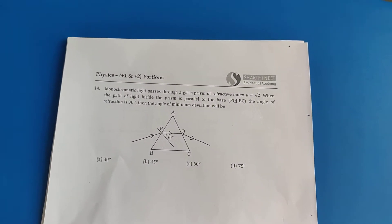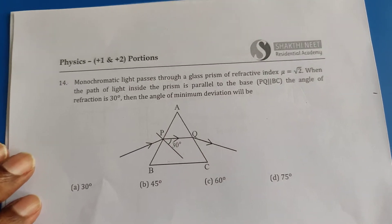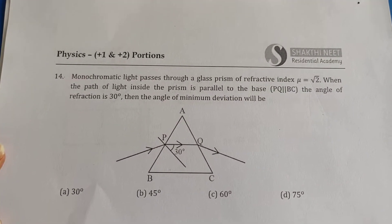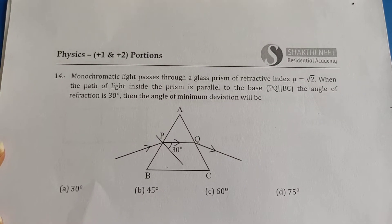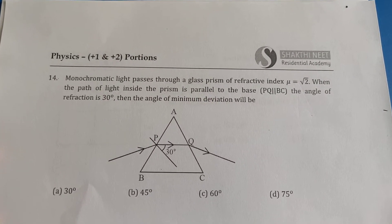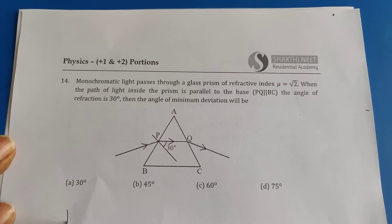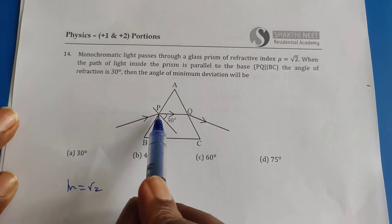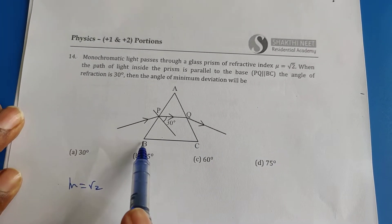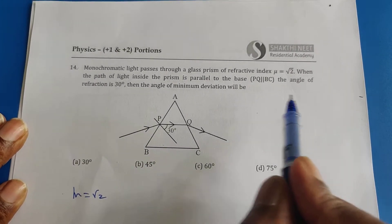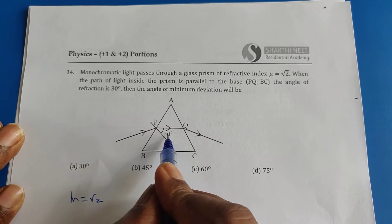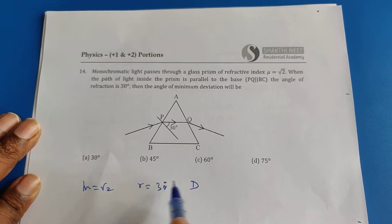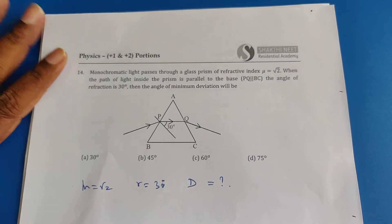Look at this problem, question 14. Monochromatic light passes through the glass prism of refractive index root 2. The path of the light inside the prism, that PQ, is parallel to BC. The angle of refraction is 30 degrees. What is the angle of minimum deviation? This is the question.